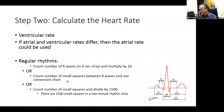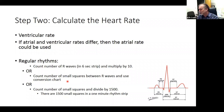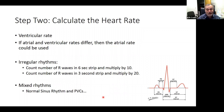If you have a conversion chart, you look up the number of small boxes. For example, if you have 20 small boxes, that's a rhythm rate of 75 beats per minute. Or you can count the number of small squares and divide by 1500 — there are 1500 squares per minute. That is your regular way to count your rhythm if it is a regular rhythm.